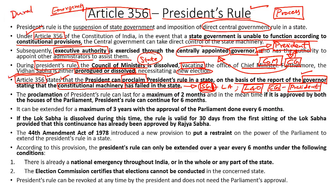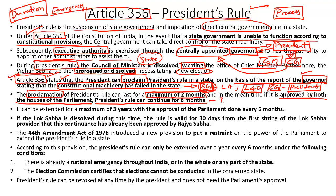Regarding the duration for which President's rule can be imposed: once the President proclaims its imposition, the proclamation is valid only for a maximum of two months. Within this period, if the government of India manages to get the approval of both houses of Parliament, President's rule can be extended for six months from the date of proclamation. Article 356 also says that President's rule can be extended for a maximum of three years, provided it is approved by Parliament every six months.